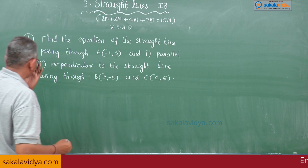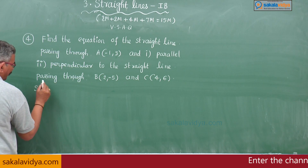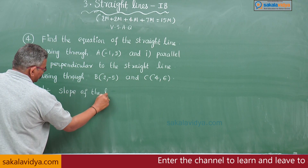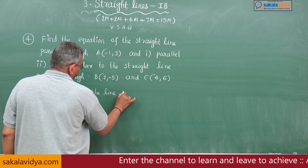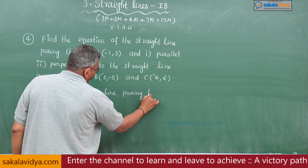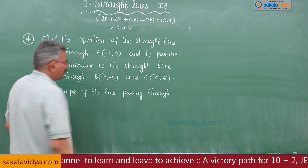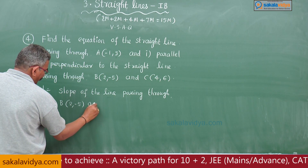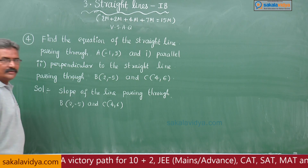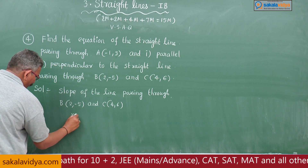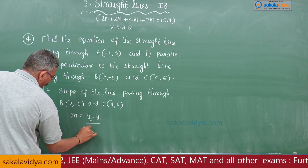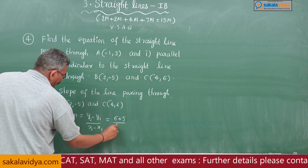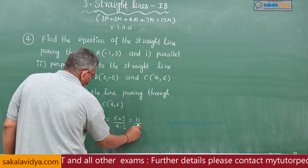First, find the slope of the line passing through B(2, -5) and C(4, 6). Using the formula (y2 - y1) / (x2 - x1): (6 - (-5)) / (4 - 2) = 11/2. So the slope of BC is 11/2.